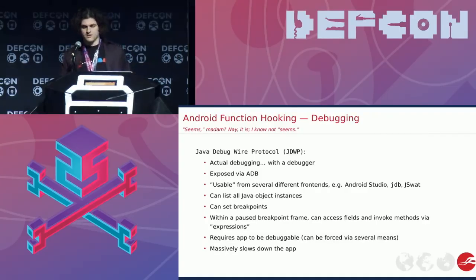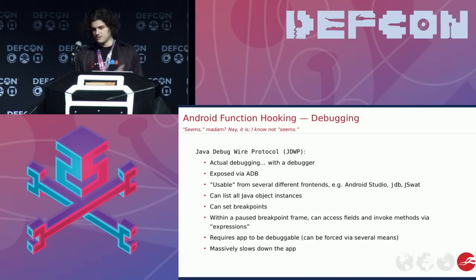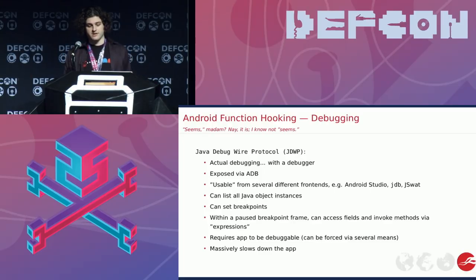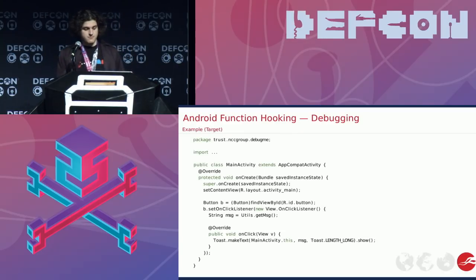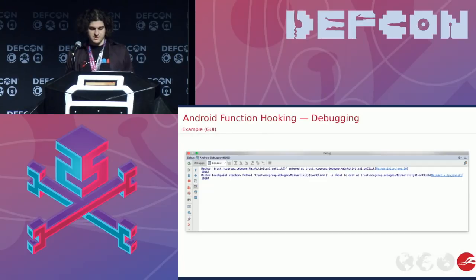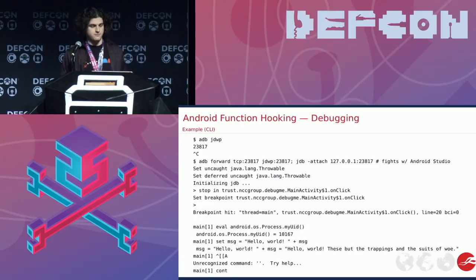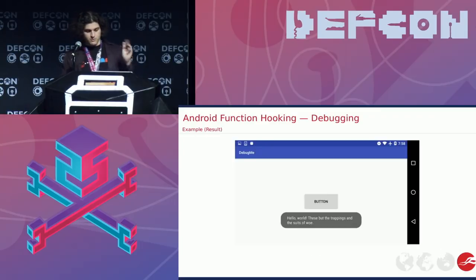The useful things from the debugger are that it can list all active instances of all Java objects. And when you set breakpoints, you can actually execute code in them from the context of the frame where the breakpoint got hit — so you can touch protected stuff and private variables. It slows down the app massively, almost to the point of being unusable. There's a lot of GUI stuff — it's all terrible. Even the command line stuff is basically toxic, but it works.